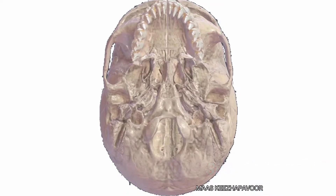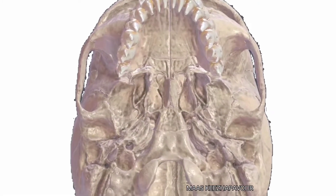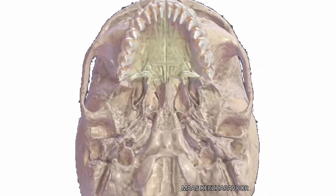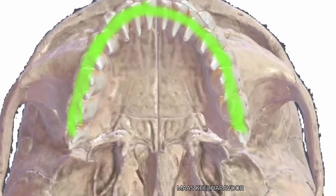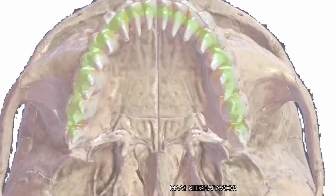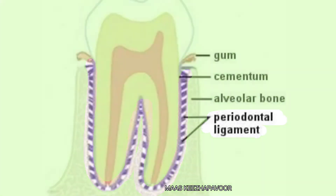The anterior part extends up to the posterior limit of the hard palate. The anterior part is formed by the alveolar arch and bony palate. The alveolar arch is formed by the alveolar process of maxilla and bears sockets for the upper teeth. The teeth are connected to the sockets by the periodontal membrane.